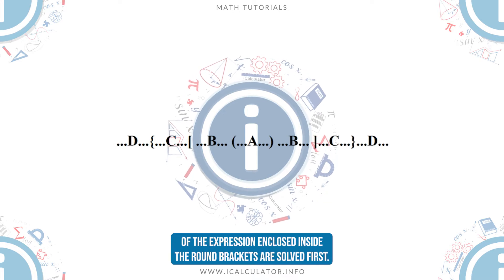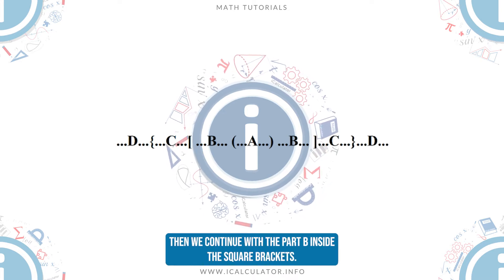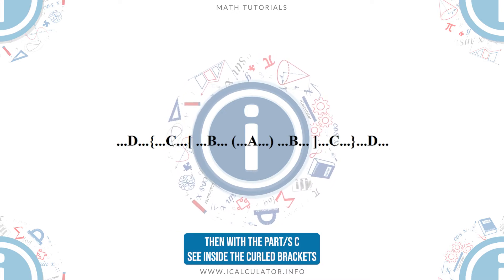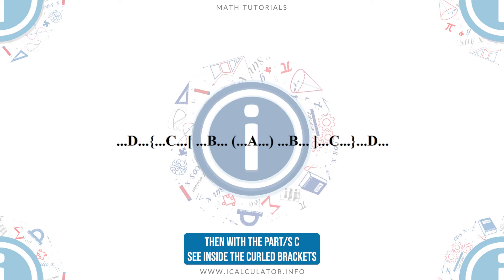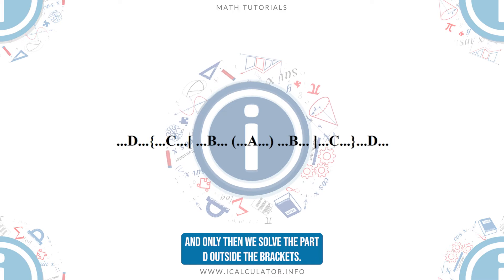Part A of the expression enclosed inside the round brackets is solved first, then we continue with the part B inside the square brackets, then with part C inside the curled brackets, and only then we solve the part D outside the brackets.